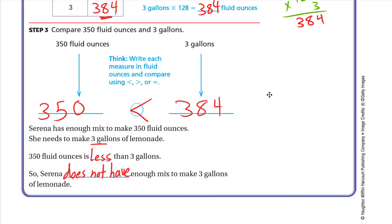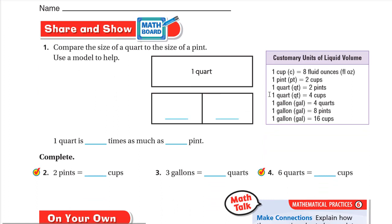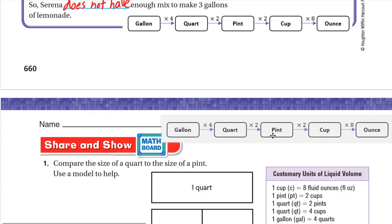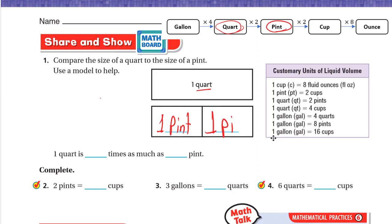For Share and Show: compare the size of a quart to the size of a pint using the model. Looking at our chart, one quart has two pints. So one quart is two times as much as one pint.